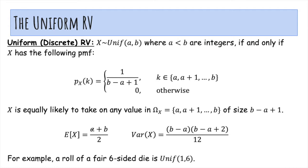The expected value of X is what you'd expect. It's the average of the endpoints, and the variance is this messy thing. For example, a roll of a fair six-sided die is uniform 1 to 6, and the probability it takes on any k between 1 and 6 is 1 over 6 minus 1 plus 1, which is 1 sixth, and hence the off by 1.